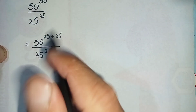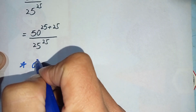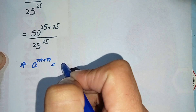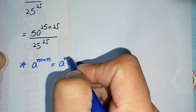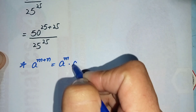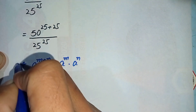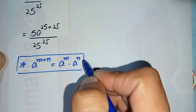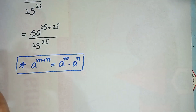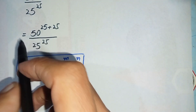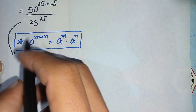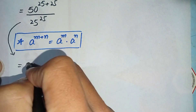Now in the numerator we will use the exponential formula: a raised to power (m + n) is equal to a raised to power m times a raised to power n. We will apply this formula to the numerator of this question.